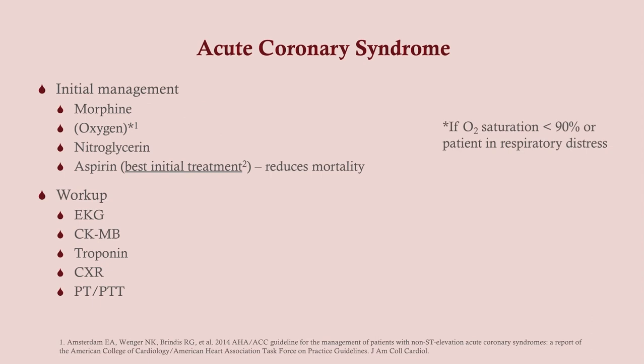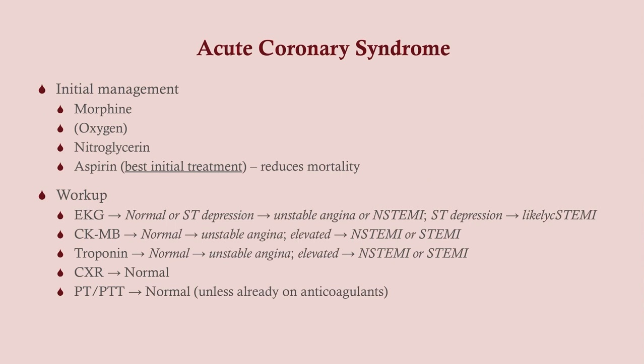Initial management: MONA — Morphine, Oxygen, Nitrates, and Aspirin. Give oxygen only if they're saturating below 90, because there's evidence that over-oxygenating can be associated with negative outcomes. Morphine reduces cardiac load — if the patient is in pain, the heart pumps harder, worsening myocardial oxygen deprivation. Nitroglycerin expands vessels, increasing oxygen delivery. Aspirin is a COX inhibitor that reduces thromboxane A2, which promotes platelet aggregation — we don't want that if the patient has a blockage.